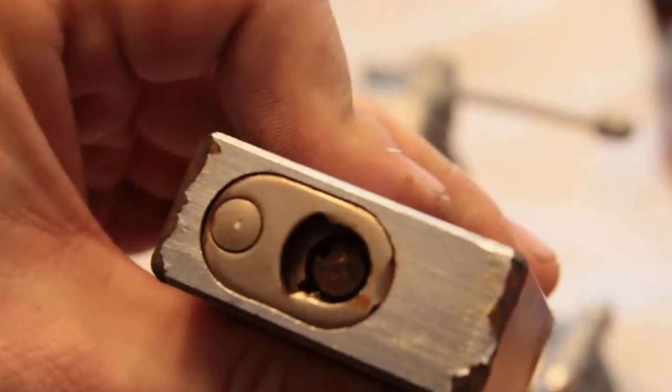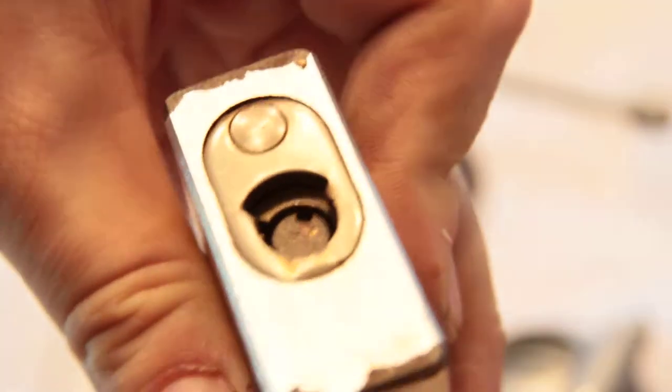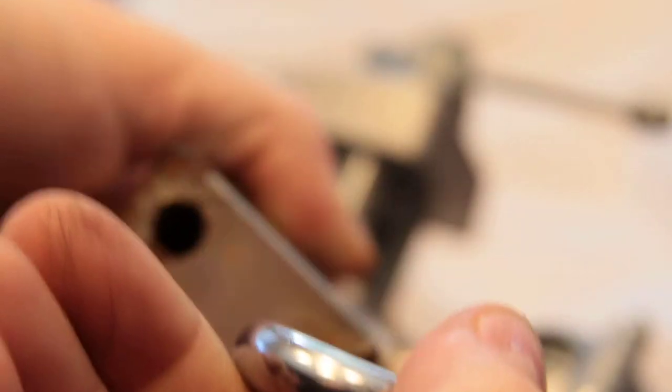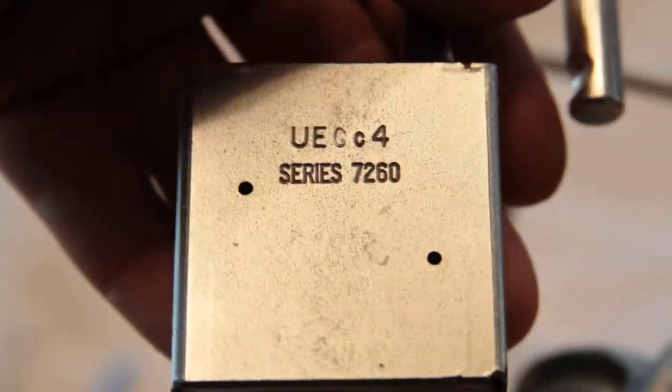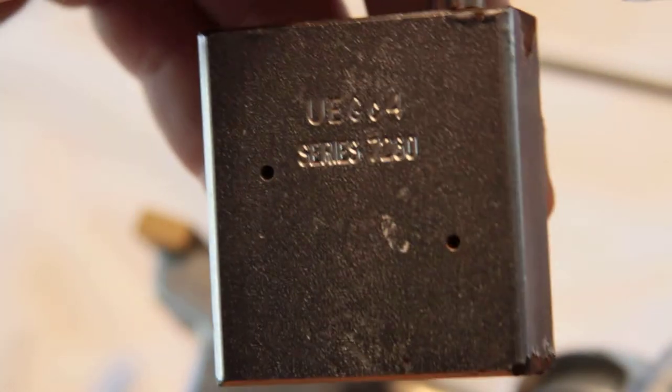There it is open. Bill sent me the key as you said, so there it is, American lock 7260 uniform echo golf, whatever that means, probably from the 90s.